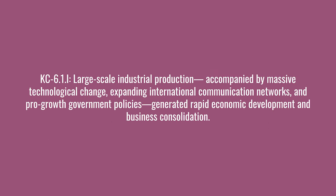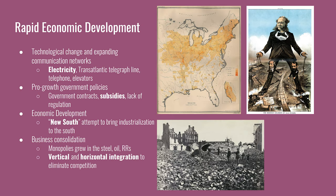The next key concept says large-scale industrial production, accompanied by massive technological change, expanding international communication networks, and pro-growth government policies generated rapid economic development and business consolidation. Similarly to the first industrialization period in the 19th century, technological innovations drove the industrial expansion. In addition to the Bessemer process, other important technological advancements include the use of electricity, the telephone, elevators, and even consumer cameras.